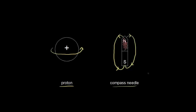We can also think about the magnetic dipole moment of the compass needle. The magnetic dipole moment, also called the magnetic moment, is a vector that points in the direction of the dipole's magnetic field. With a north pole and a south pole, the magnetic moment points in this direction.